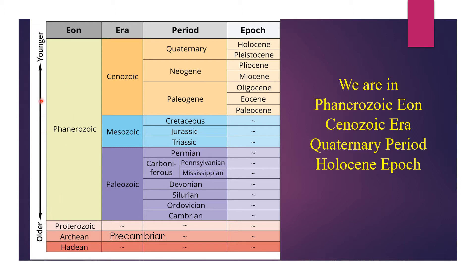We are currently living in the Phanerozoic Aeon, Cenozoic Era, Quaternary Period and Holocene Epoch. Before the Phanerozoic Aeon was the Precambrian, which is the earliest part of Earth's history. Precambrian is so named because it precedes the Cambrian, the first period of the Phanerozoic Aeon.